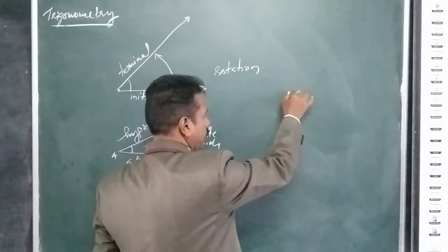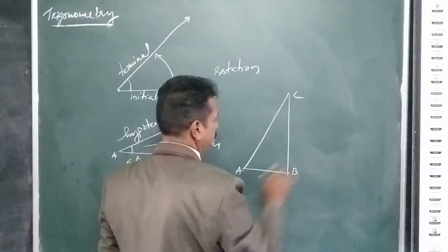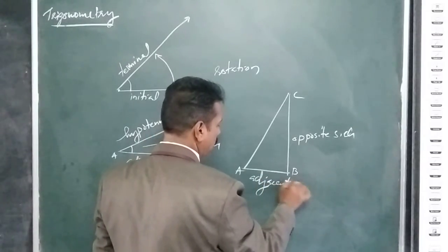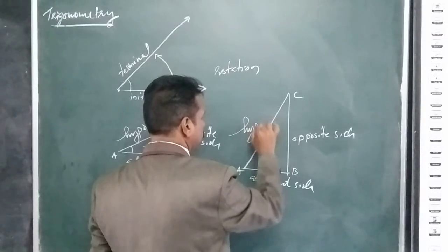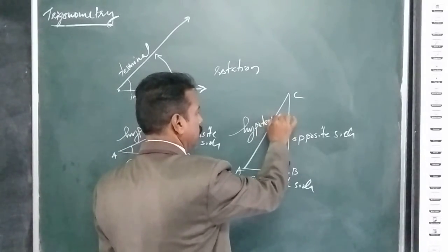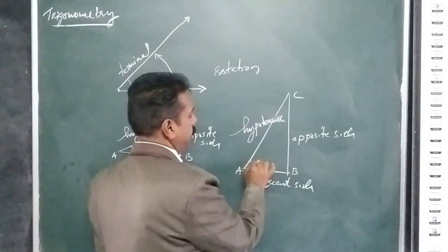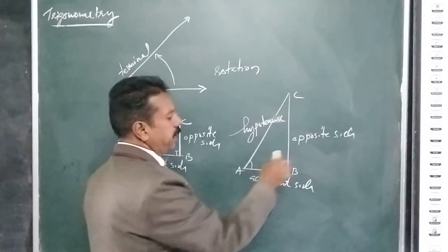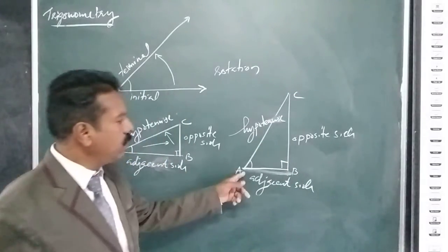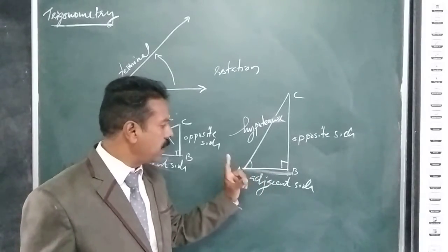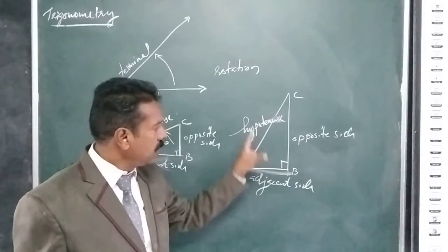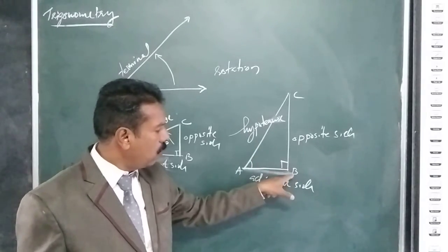Now, with respect to an acute angle of the right-angled triangle: the side opposite to the acute angle is the opposite side, the side nearer to the angle is the adjacent side, and the hypotenuse is always the longest side of the right-angled triangle — the side opposite to the 90-degree angle.